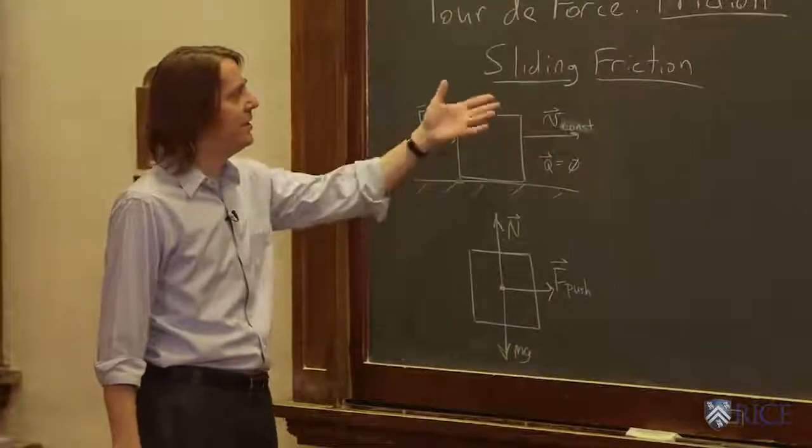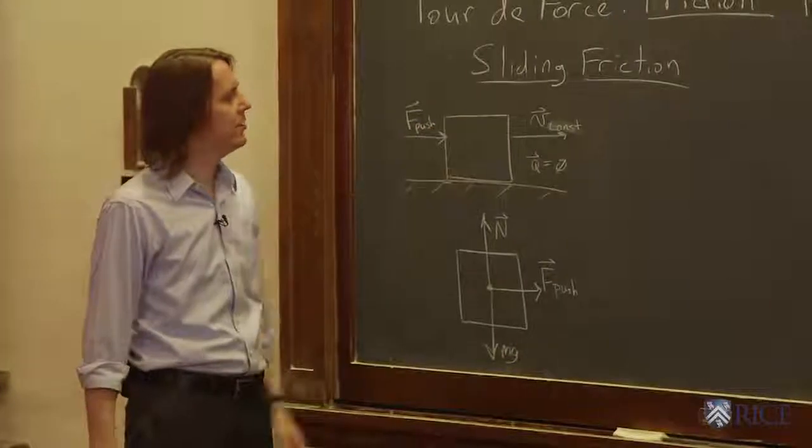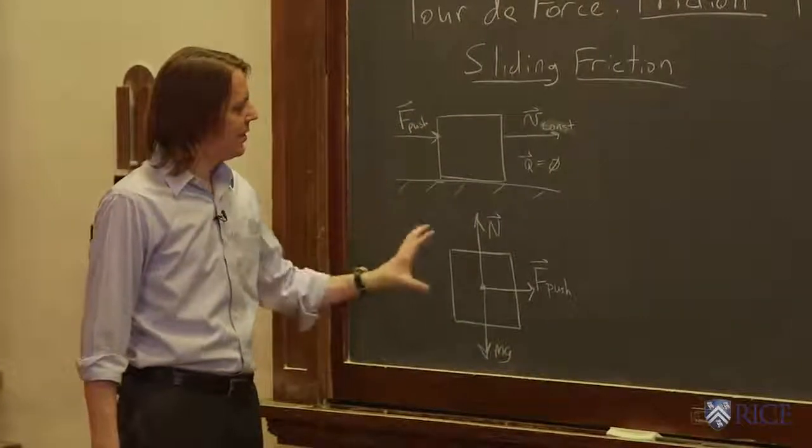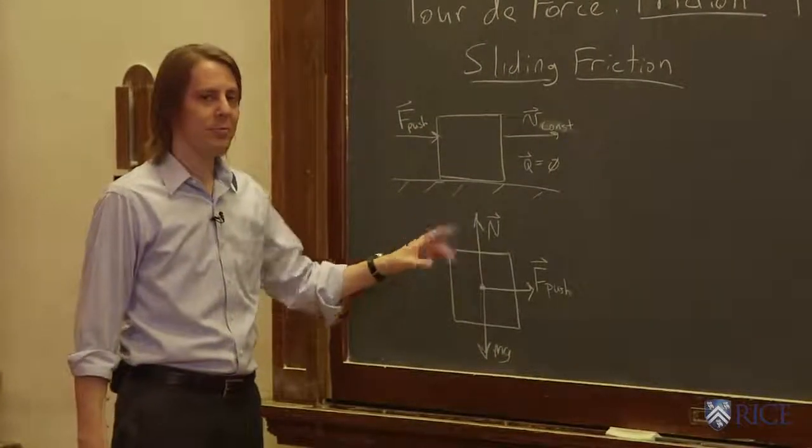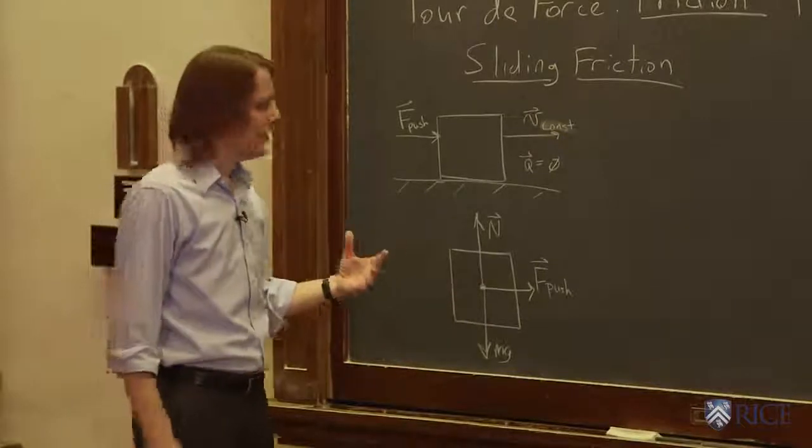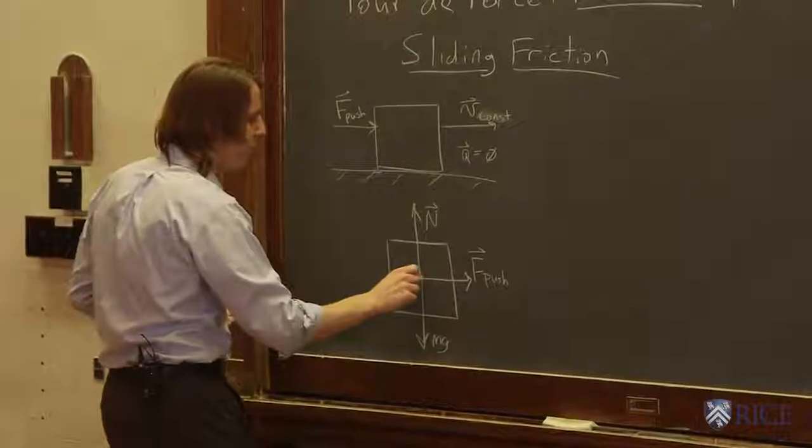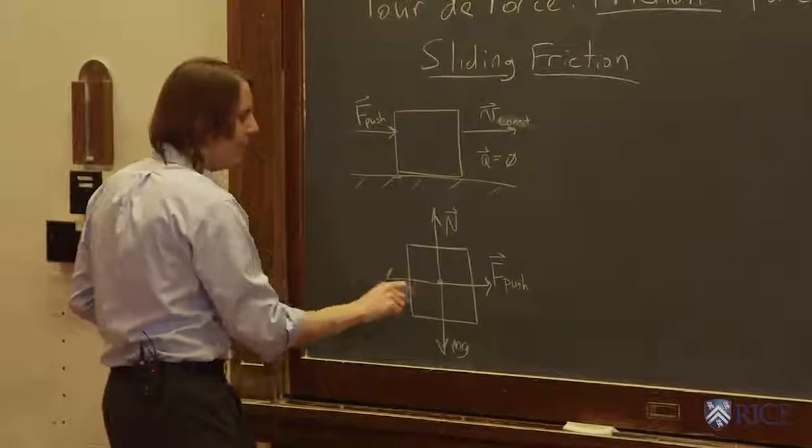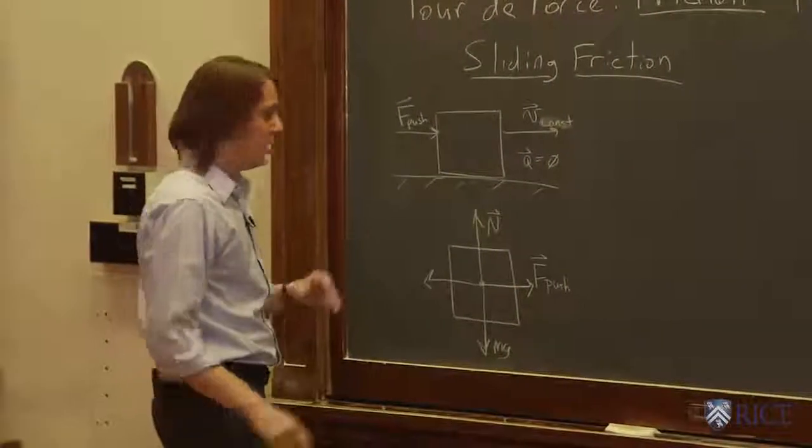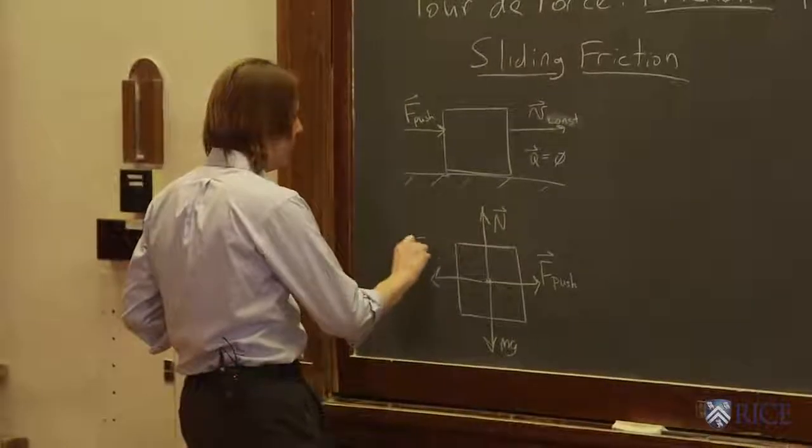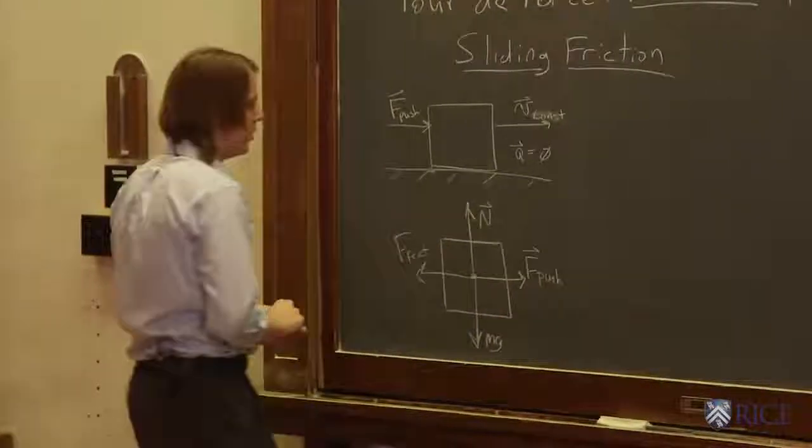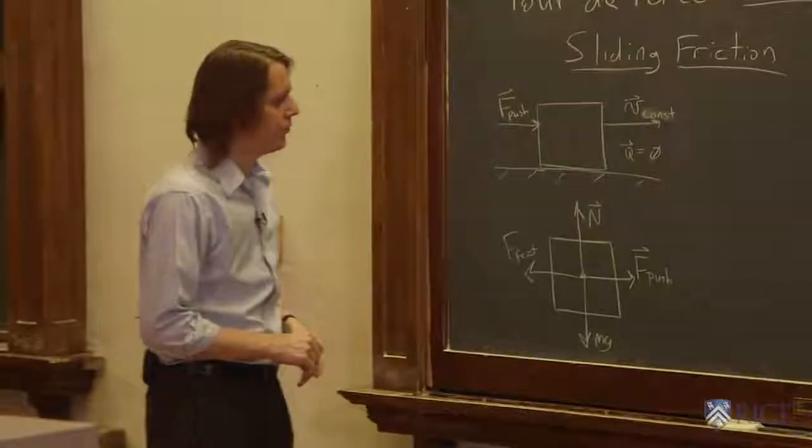If the velocity is constant, dv/dt, the rate of change of the velocity is zero. If the acceleration of the block is zero, there must be no net force. So this friction force I was telling you about must push back. We know it opposes motion. But in this case, we also know that it's equal and opposite to the pushing force. We'll call it f_frict for friction.